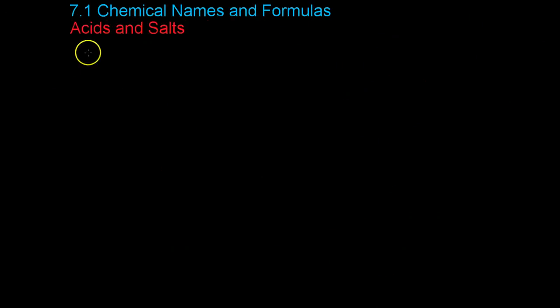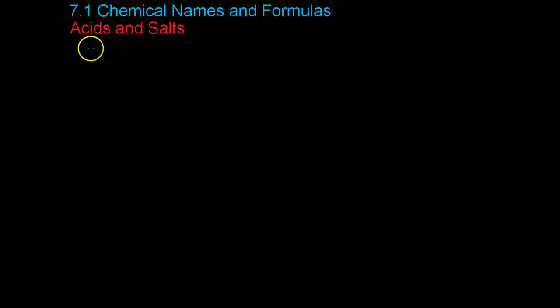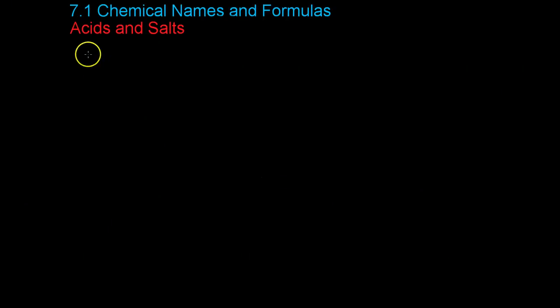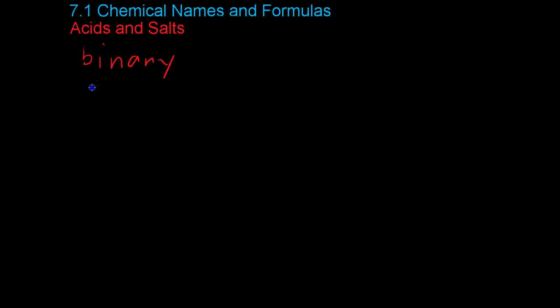So the last thing we're going to be covering in this video are acids and salts. Now, acids we're going to study more later on, but the first thing you need to know is that there are two main types of acids. There are binary acids and what are called oxyacids.